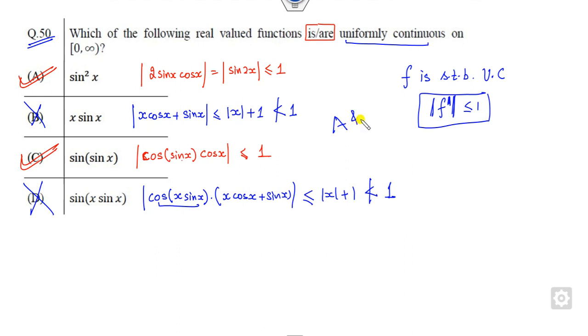So the correct option of this problem is A and C. Moreover, you can clearly say that if this function is not uniformly continuous, and this is a composite function of it, then it is not uniformly continuous.